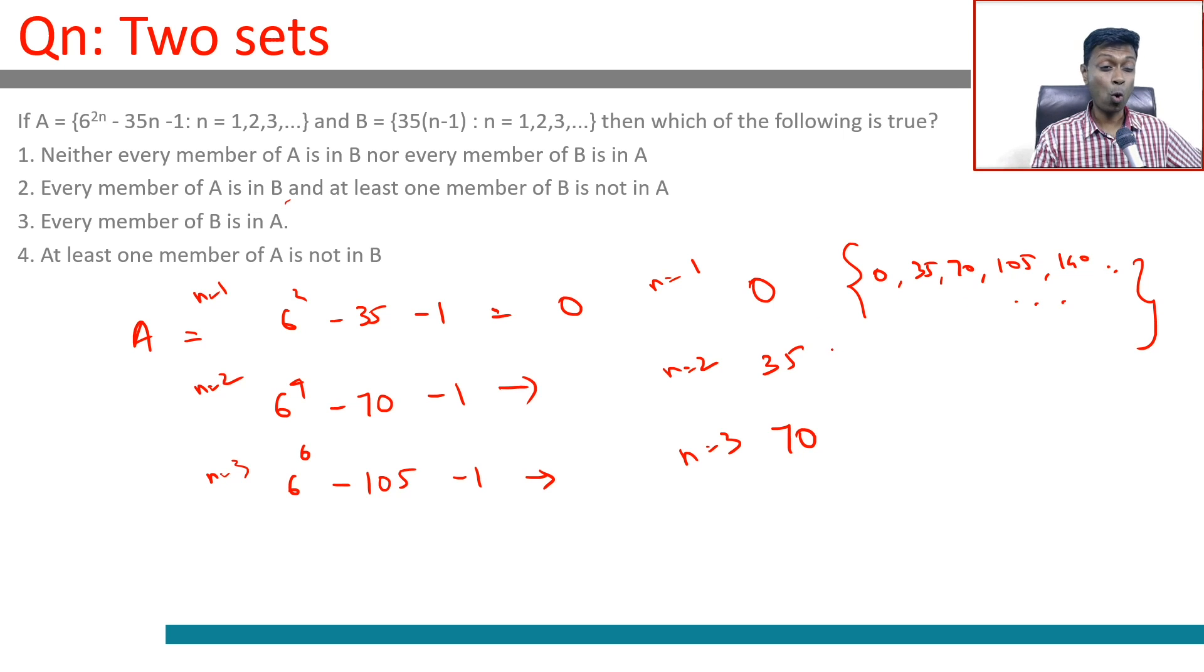This question just opens up because of this. Neither every member of A is in B nor every member of B is in A - every member of B is in A, this is wrong. 70 is not in A. A is galloping away.